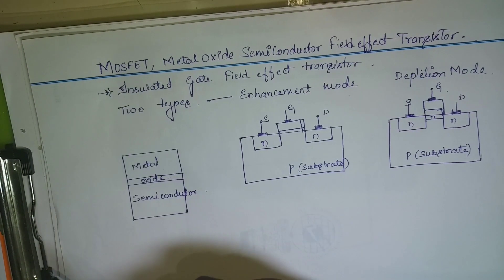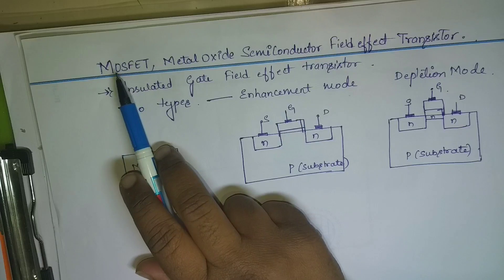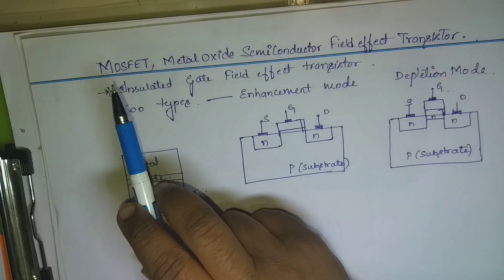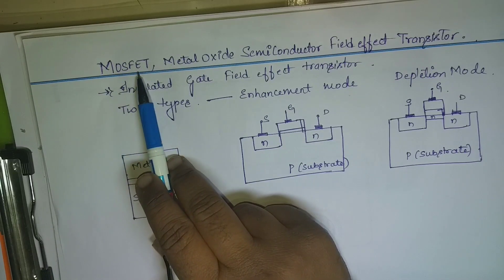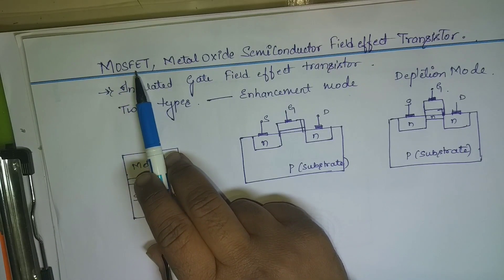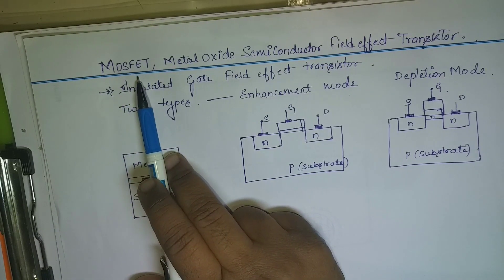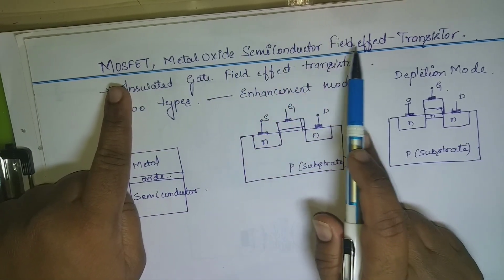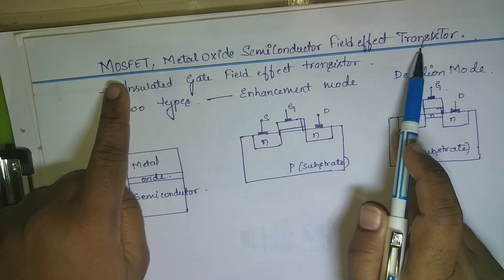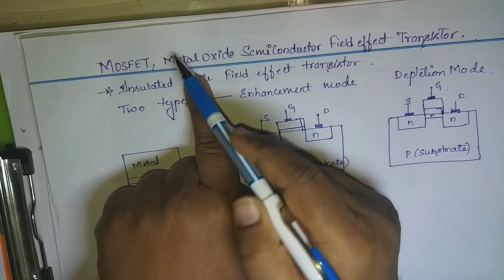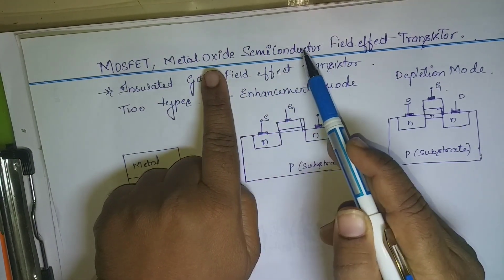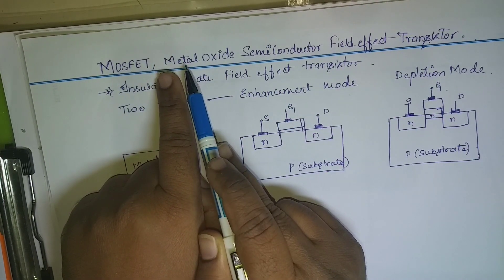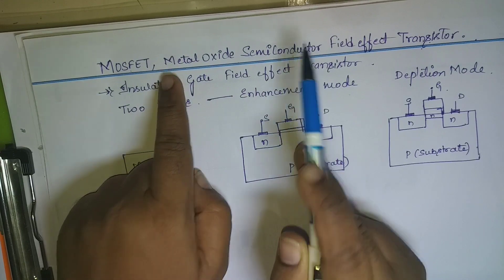Hello dear students, welcome to the next section. In module 2 we have three transistors to study — the first one is FET, the second one is MOSFET. In this class we will study about the MOSFET. MOSFET is a Metal Oxide Semiconductor Field Effect Transistor — a transistor which is made out of three elements: metal, oxide, and semiconductor.